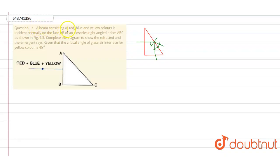So guys, in this question it is given that a beam consisting of red, blue, and yellow colors is incident normally on the face AB of an isosceles right-angled prism ABC as shown in the figure. Complete the diagram to show...